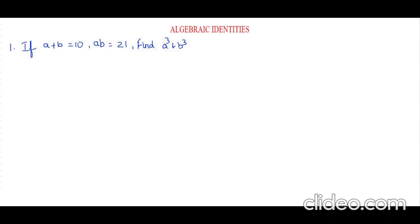Hello, welcome to my channel Math with Nazia. In this video, we are going to learn two examples of algebraic identities. The first example is: if a plus b equals 10 and ab equals 21, find a cube plus b cube.